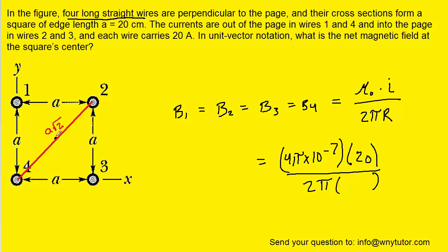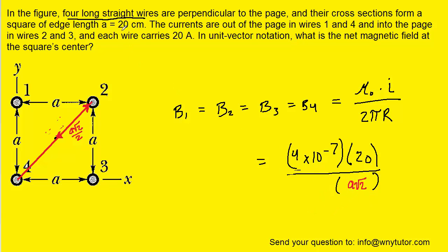Because it's a square, we know that the diagonal — and we can prove this using the Pythagorean theorem — has a length of A√2. We only want half of that distance, because the distance from the center of the square to each wire is half the length of the diagonal, which is A√2 divided by 2. Plugging into the formula, the 2s and the π cancel. Converting 20 centimeters to 0.2 meters and plugging in, each magnetic field has a magnitude of approximately 2.83 × 10⁻⁵ Tesla.